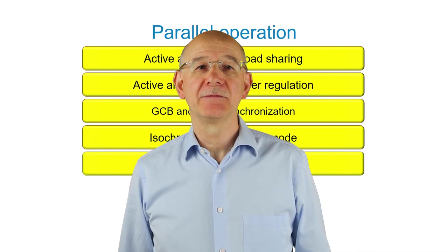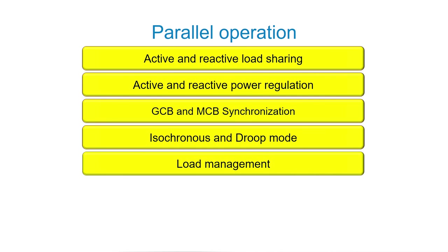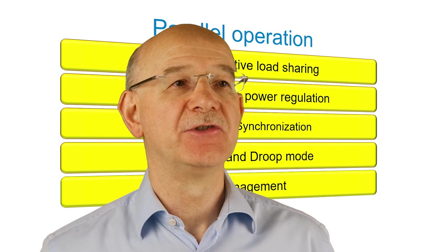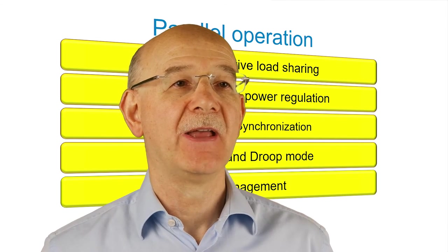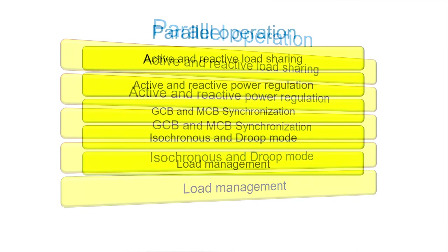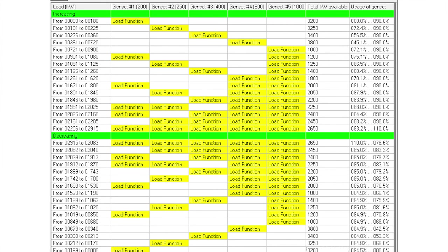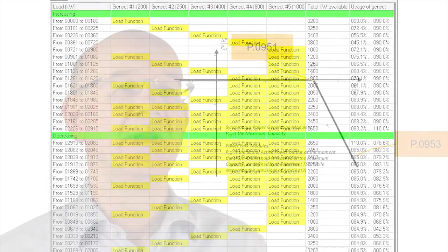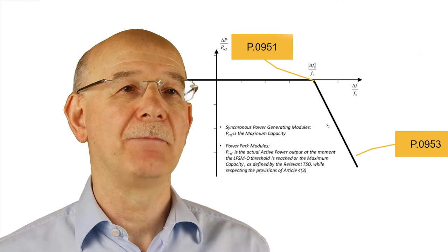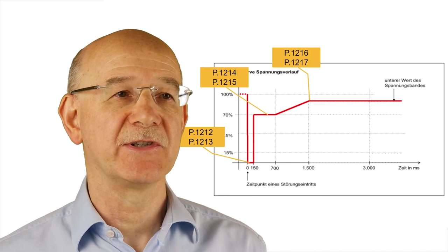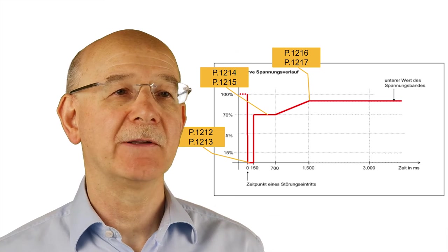Multiple generators working in island mode require active and reactive load sharing. When working in parallel-to-mains applications, active and reactive power regulation is the requirement. The GC600 supports both GCB and NCB synchronization, allowing smooth load transfer in any application. Beside isochronous mode, the GC600 also supports droop mode emulation, allowing load sharing even when no sharing bus is available. The GC600 implements a load management function for up to 16 generators, and also smart load management for up to 5 generators — a function able to select the best generator combination for the applied load. The GC600 also implements dynamic support of the network for parallel-to-mains operation, for both voltage and frequency, making the plant compliant with requirements from many regulation bodies.